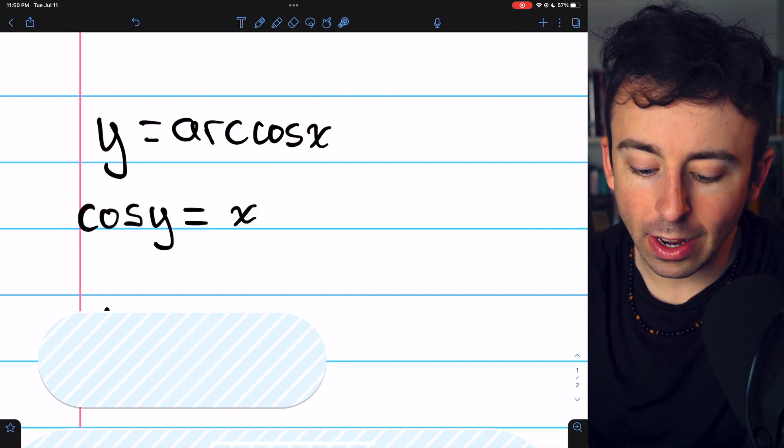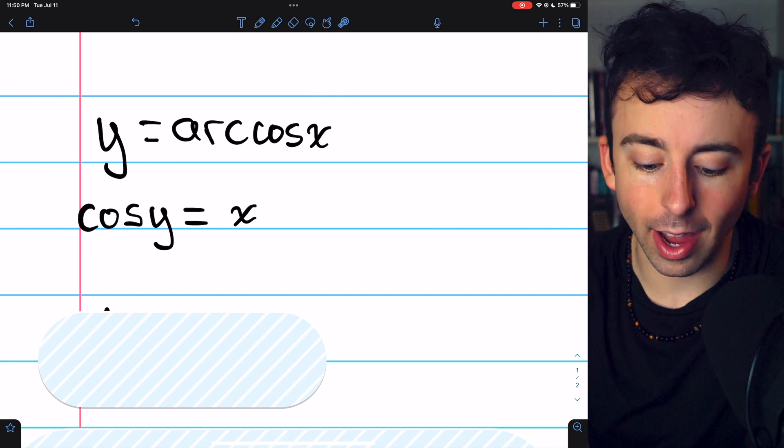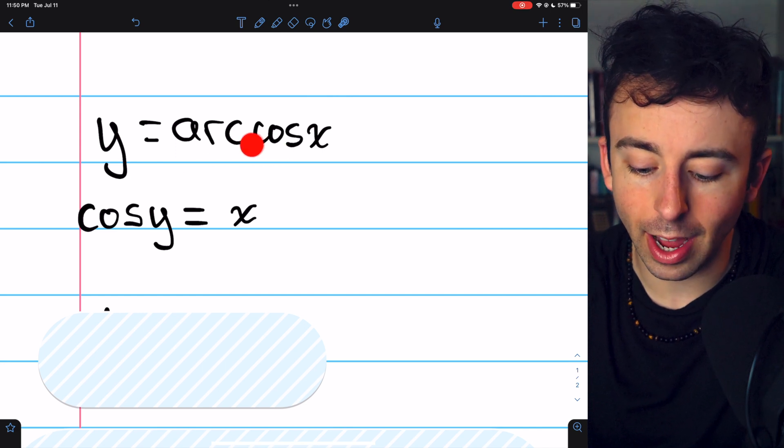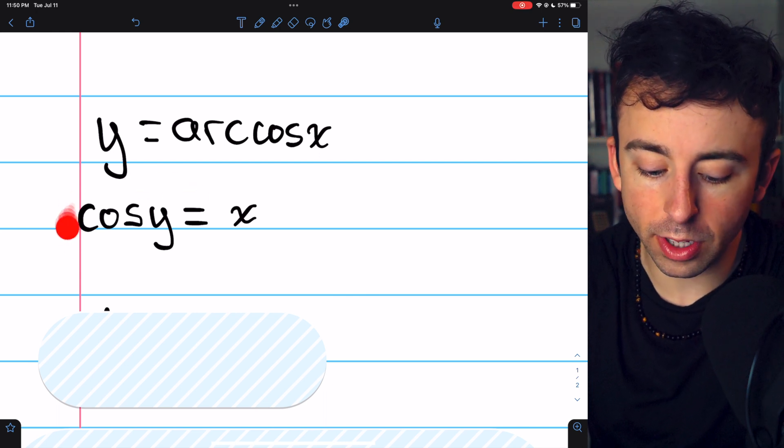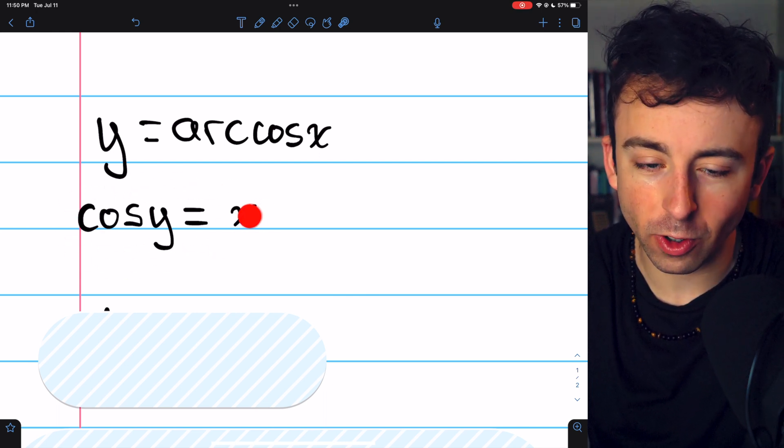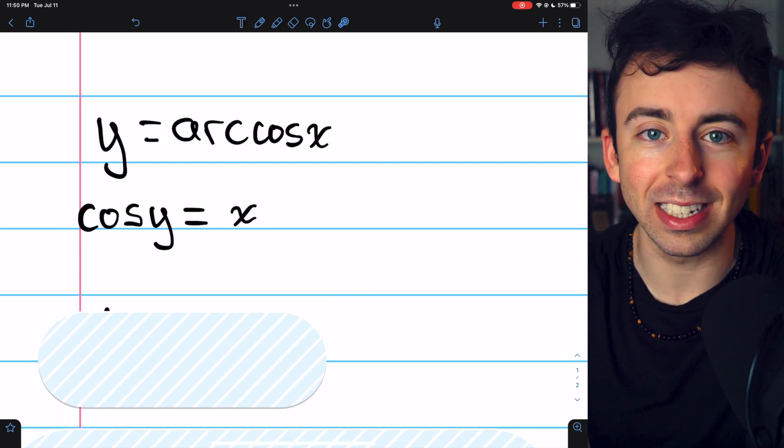we'll have cosine y, and on the right, since cosine is the inverse of arc cosine, they'll cancel out and we'll just have x. We know the derivatives of everything in this equation, so now we can start to use implicit differentiation.